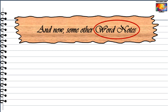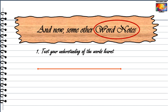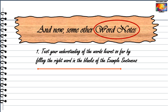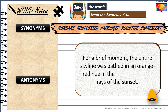We have now reached the second half of this lesson, which targets the usage of these five words through sentences and other notes. We will first test your understanding of the words learned so far by filling in the right word in the blanks of the example sentences. You can pause the video to attempt them on your own. After that we will learn the synonyms and antonyms of each word. First sentence: for a brief moment the entire skyline was bathed in an orange-red hue in the dash rays of the sunset. The correct word is evanescent, which means fleeting or vanishing.